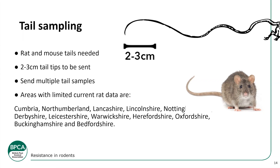For more information on tail sampling, go to the thinkwildlife.org website. They particularly need more samples from areas like Cumbria, Northumberland, Lancashire, Lincolnshire, Nottinghamshire, Derbyshire, Leicestershire, Warwickshire, Hertfordshire, Oxfordshire, Buckinghamshire, and pretty much all of Scotland. There's also a sparse area around the north Wales border. If there's no sampling in your area on the map, it would be really helpful to fill in those blank spots — this helps us see where these mutations are spreading across the country.